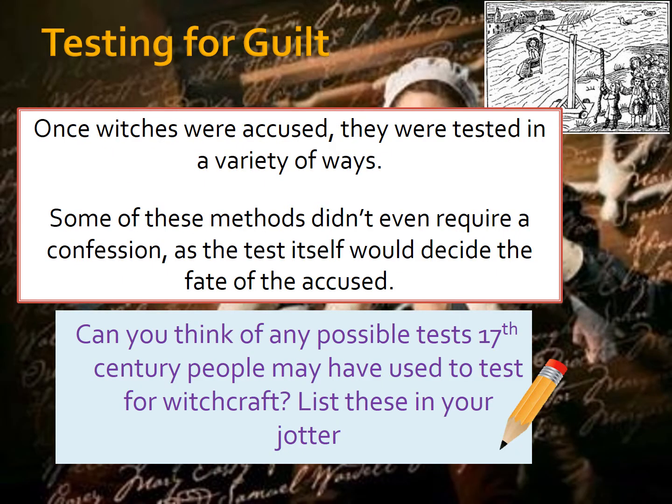Now, testing for guilt. Once witches were accused, they were tested in a variety of different ways. Some of these methods didn't even require a confession, as the test itself would decide the fate of the accused person. Can you think of any possible tests that 17th century people may have used to test for witchcraft? Try to list some in your jotter — you'll have a clue from the picture at the top, and we're going to go over some of them in a moment.